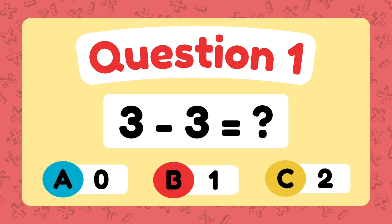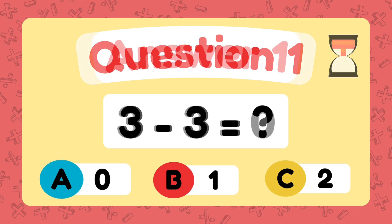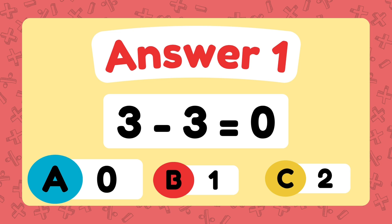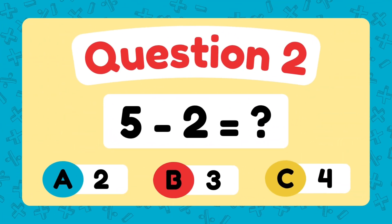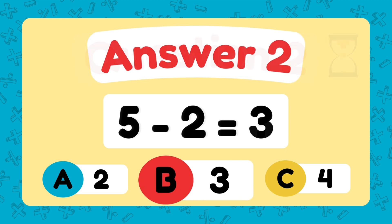What is 3 minus 3? The answer is 0. What is 5 minus 2? The answer is 3.